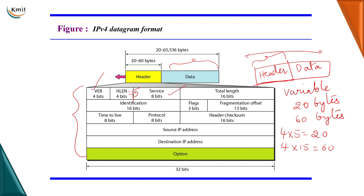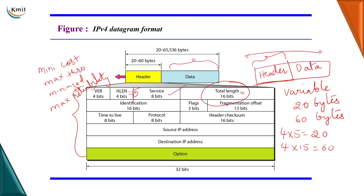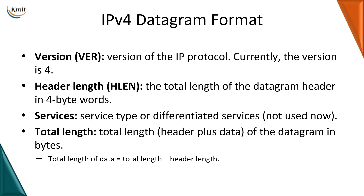Then comes the service field, which specifies what kind of service the datagram is providing — for example, minimized cost, maximized throughput, minimized delay, or maximized reliability. Then comes the total length field. The total length of the datagram is the length of the header plus the length of the data. If you only want the length of the data, subtract the header length from the total length.